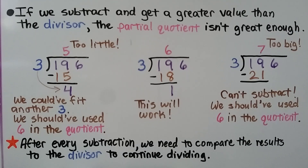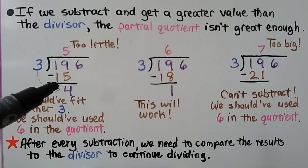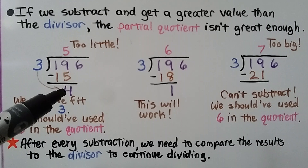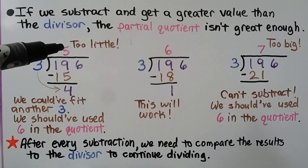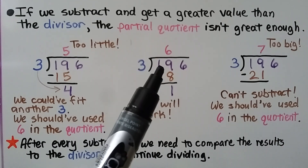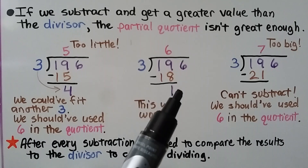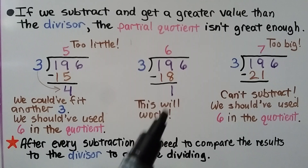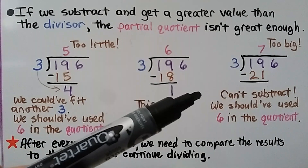If we subtract and get a value greater than the divisor, the partial quotient isn't large enough. For example, 196 divided by 3: if we put a 5 in the quotient, 3 times 5 is 15, and 19 minus 15 is 4. But 3 can still fit into 4, so we should have used a 6. With 6: 3 times 6 is 18, 19 minus 18 is 1, and 3 cannot fit into 1 yet. If we tried 7, 3 times 7 is 21 — too great to subtract. After every subtraction, compare the result to the divisor.